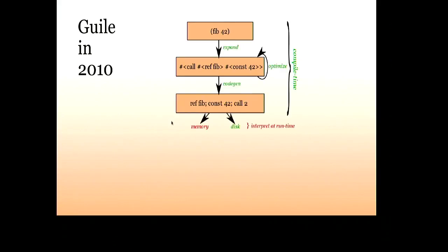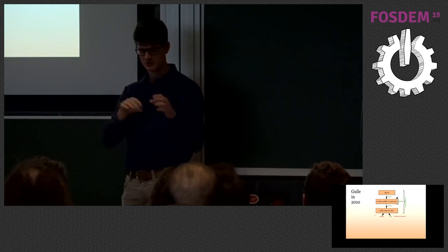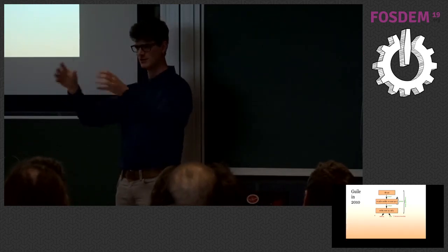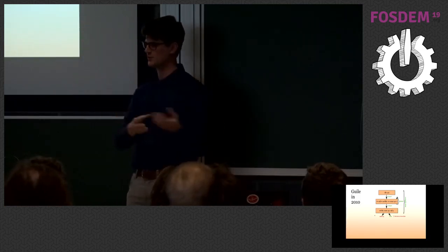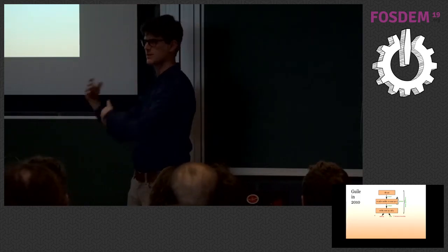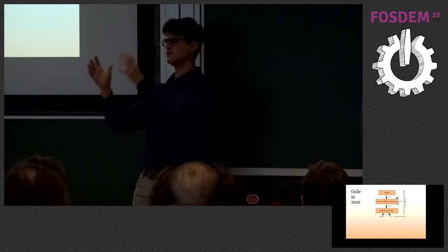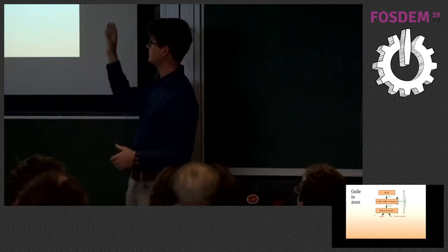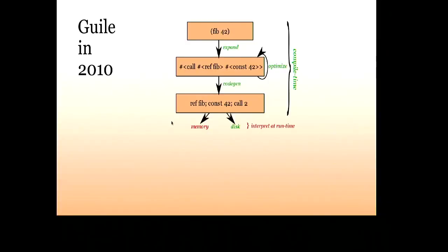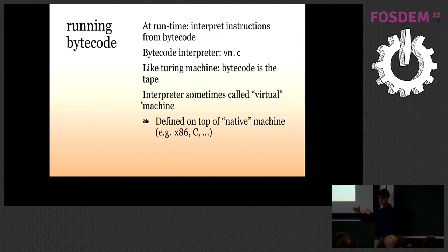What we added was a separation between compile time and runtime. On the primitive Scheme form, we would expand at compile time so you wouldn't have to at runtime. In old GUILE, you had to write your macros with performance in mind, knowing they'd run every time you ran the program. With a compilation phase, we could run macro expansion, analysis, and optimization at compile time, so at runtime you'd have a bytecode which would then be interpreted.